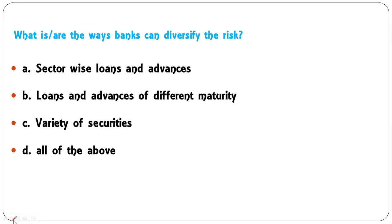What are the ways banks can diversify risk: sector-wise loans and advances, loans and advances of different maturity, variety of securities, or all of the above? Banks cannot give loans to only one sector, only short-term or long-term, or take only one type of collateral. Variety is needed in all these areas, so all of the above is the correct answer.